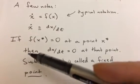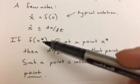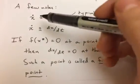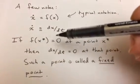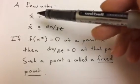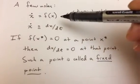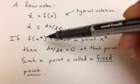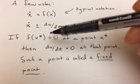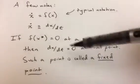then dx/dt is equal to 0 at that point. So that should be sort of obvious, because if we have a point x star where f of x star is equal to 0 and we have a differential equation that says that x dot is equal to f of x, well, that means that at x star, f of x is 0, so dx/dt is also 0 at that point.